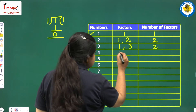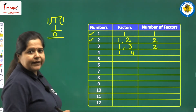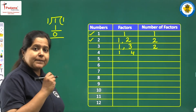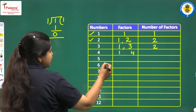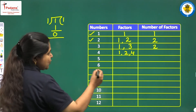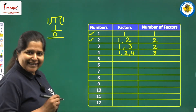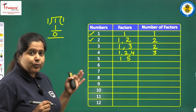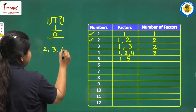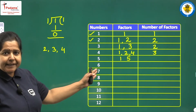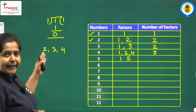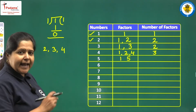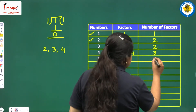Then we move on to 4. Obviously, 1 is a factor of 4, and 4 will be a factor of itself. In between we have 2 and 3. Obviously 2 will divide 4 completely because 4 comes in the table of 2, or we say 4 is a multiple of 2. So we have one more factor of 4 which is 2, and in all we have 3 factors of 4. Then we move on to 5. Again, 1 is a factor of 5 and 5 itself will be its factor. In between we have 2, 3, and 4. Since 5 does not come in the table of 2, 3, or 4, they are not factors of 5. So only 2 factors: 1 and 5.